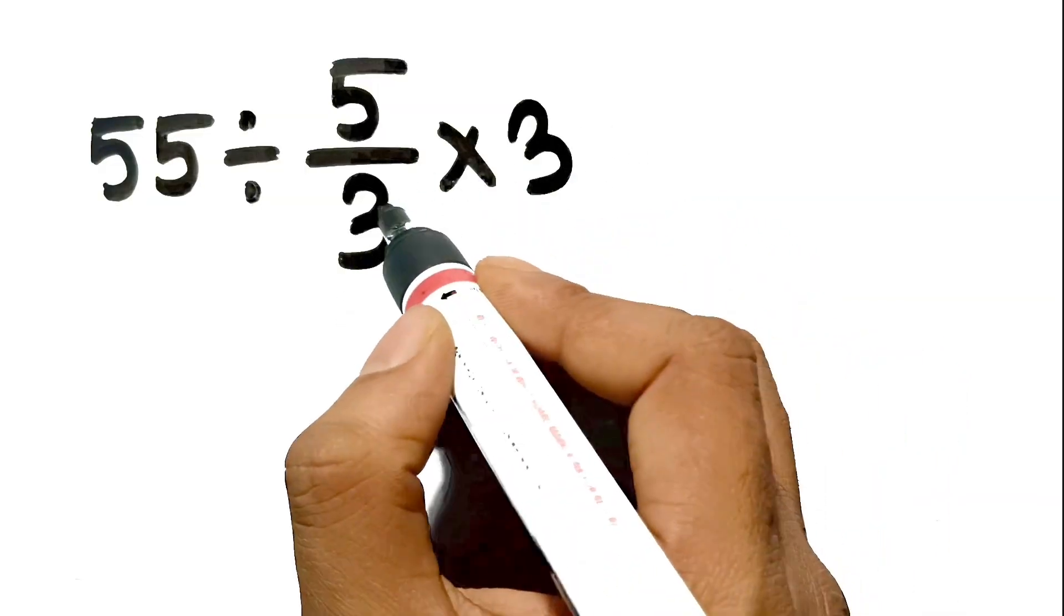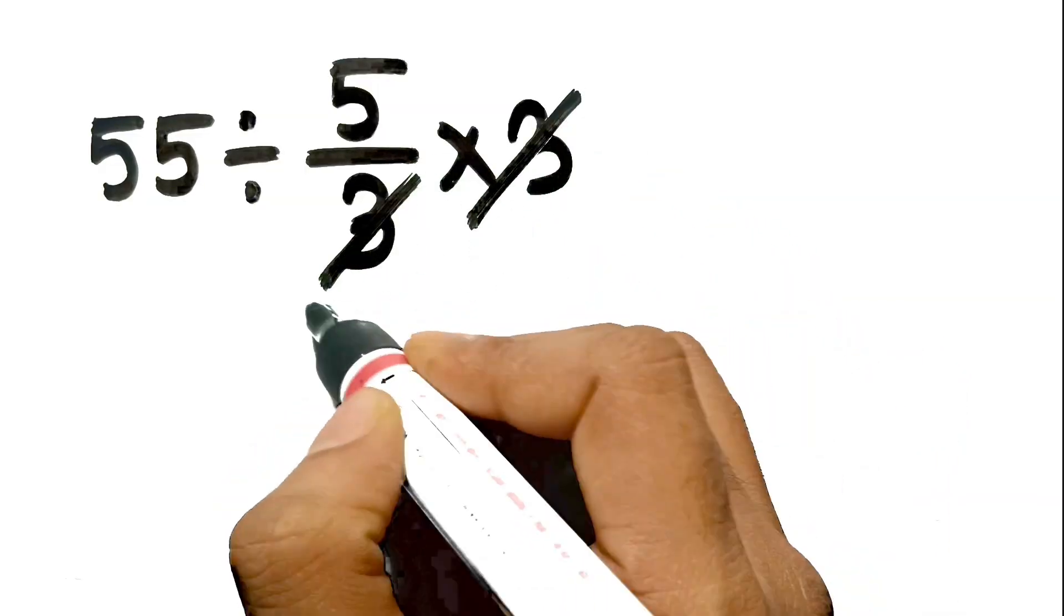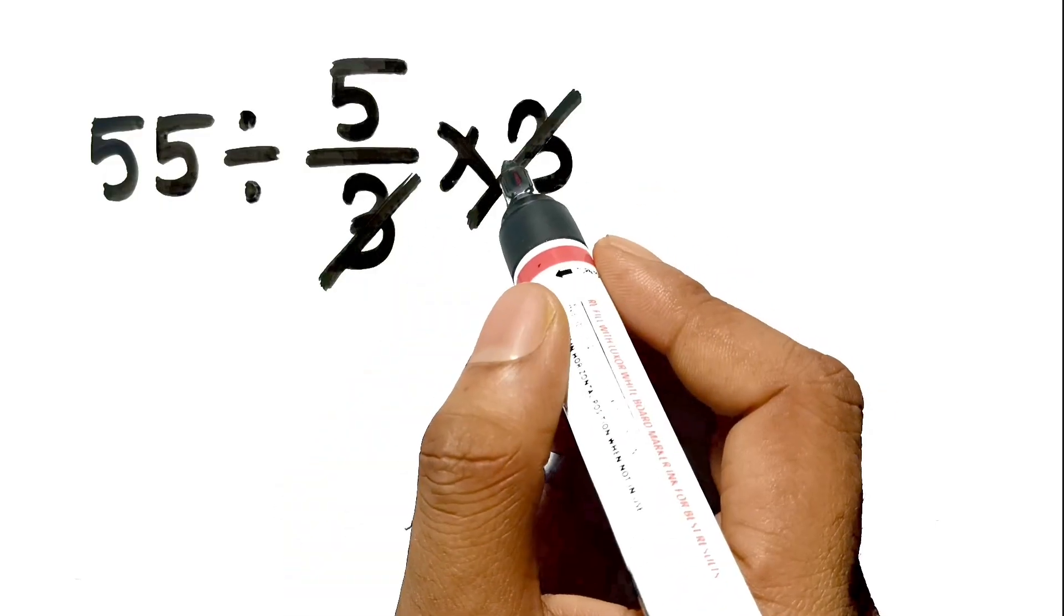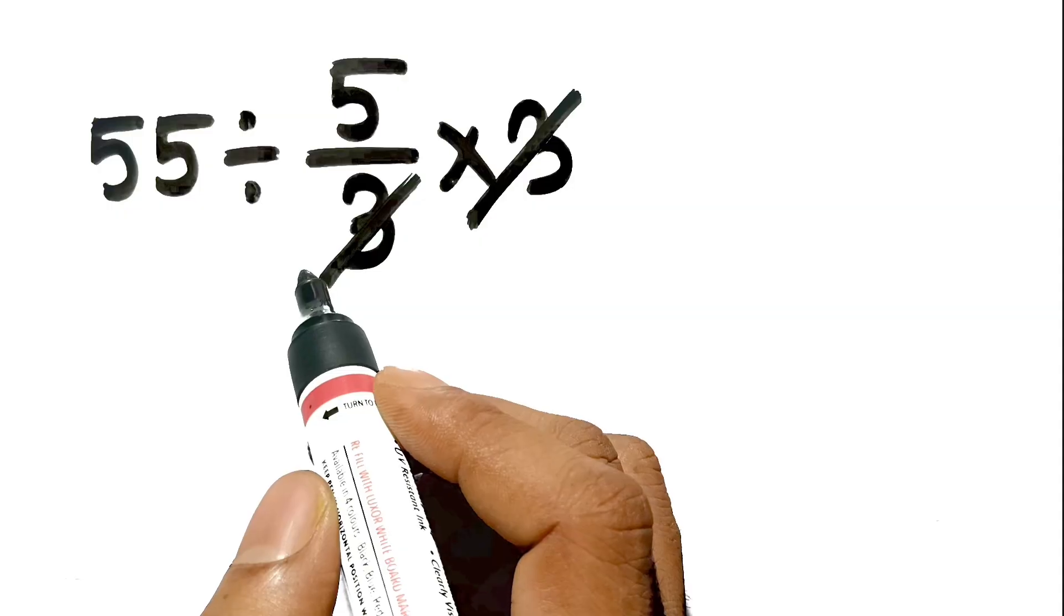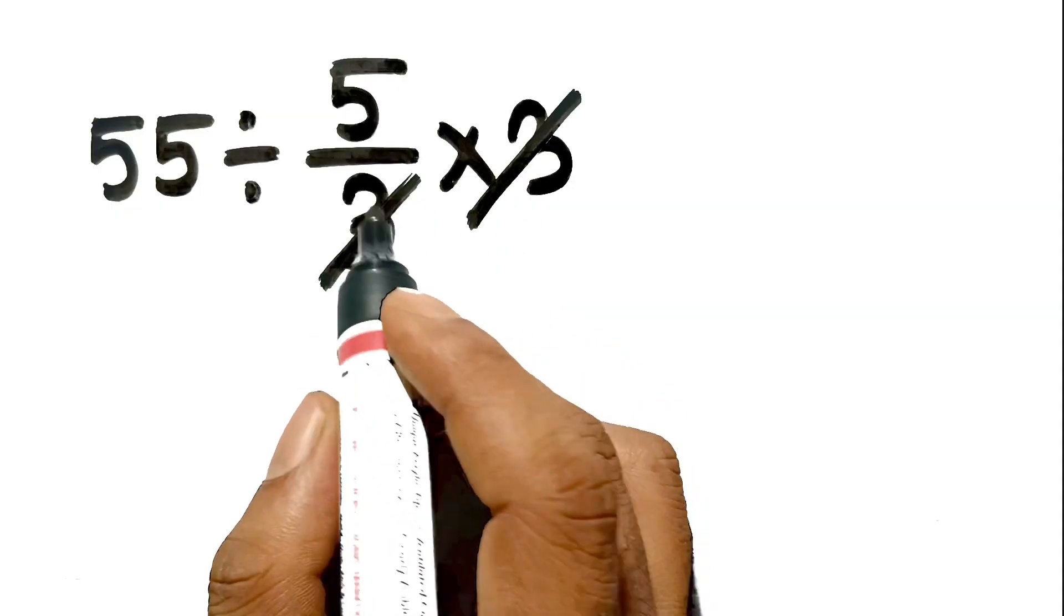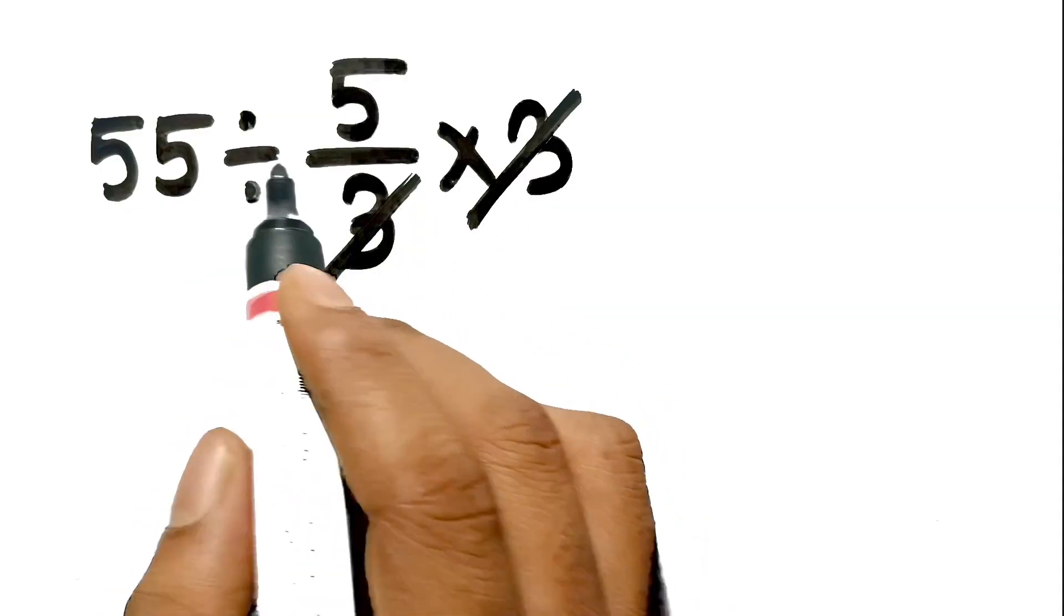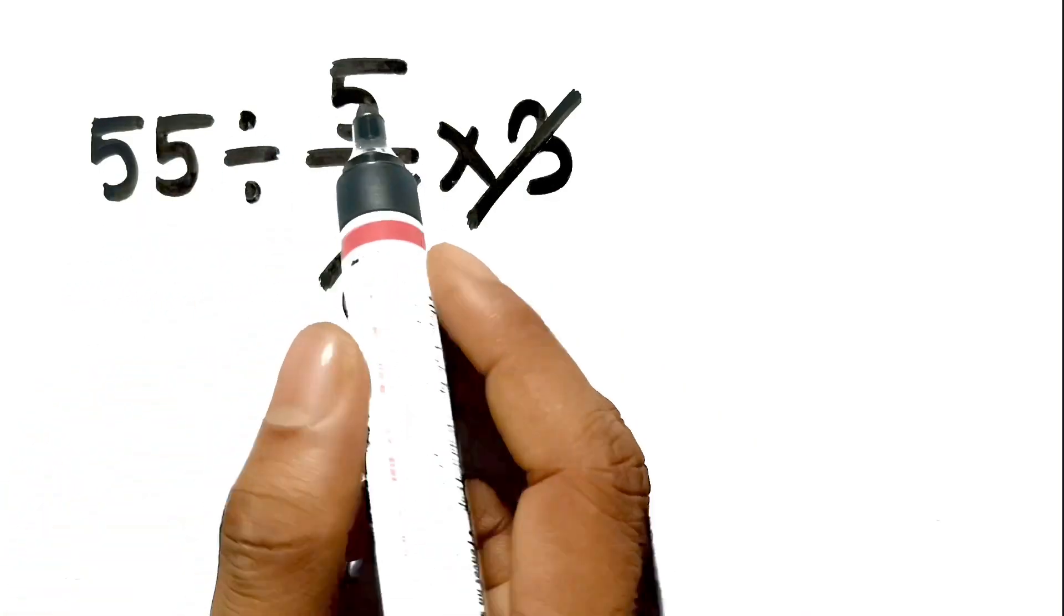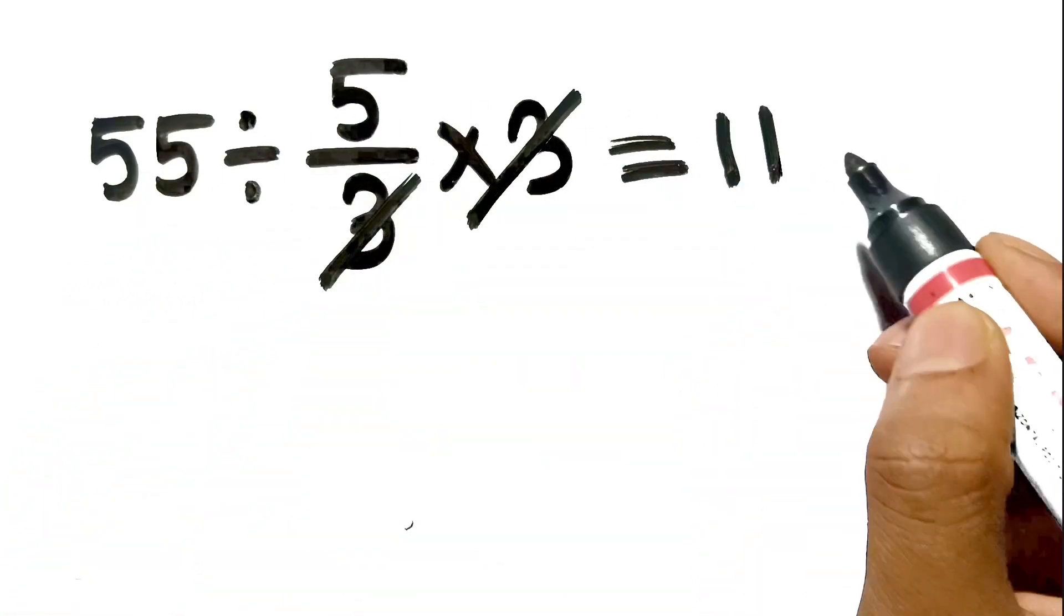Naturally, our brain wants to find a shortcut. We think that dividing by 3 and multiplying by 3 are opposite operations, so they must cancel each other out completely. If we assume they cancel, we remove them from the picture, and that just leaves us with 55 divided by 5. 55 divided by 5 gives us 11.